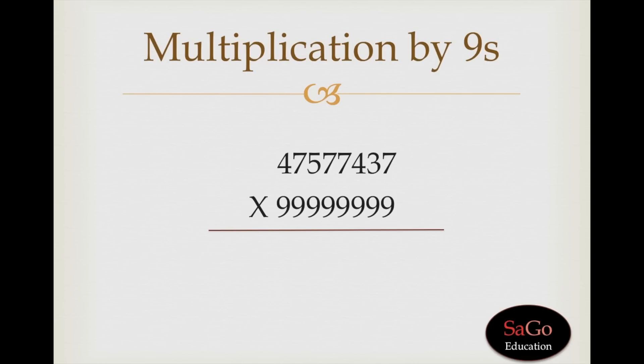In this video, we learn how to multiply numbers when multiplying with 9s. In this sum, 47577437 is multiplying by that many number of 9s.